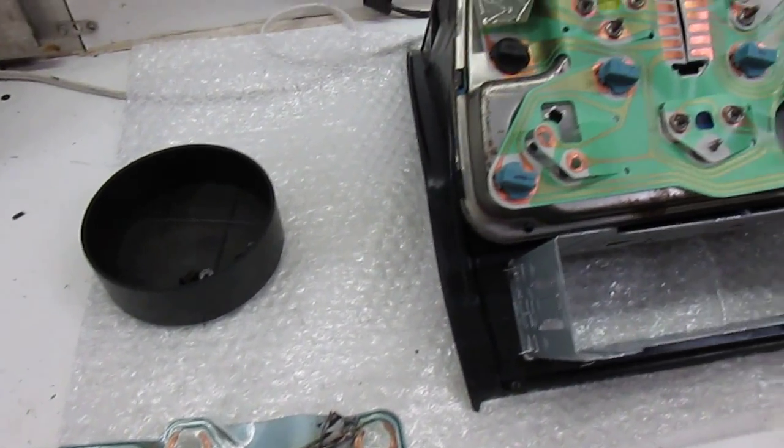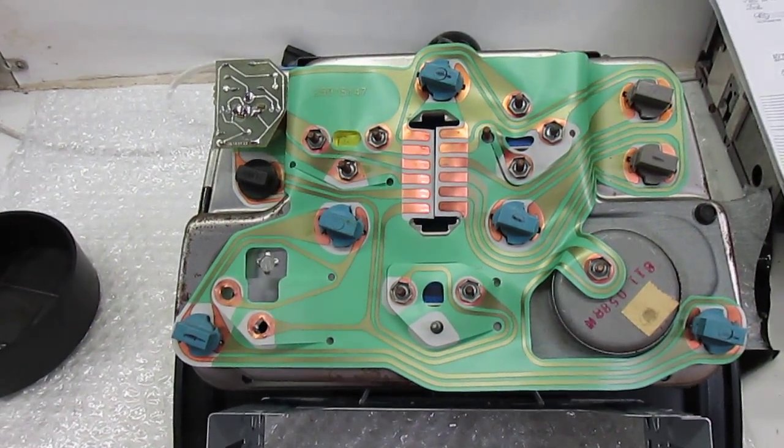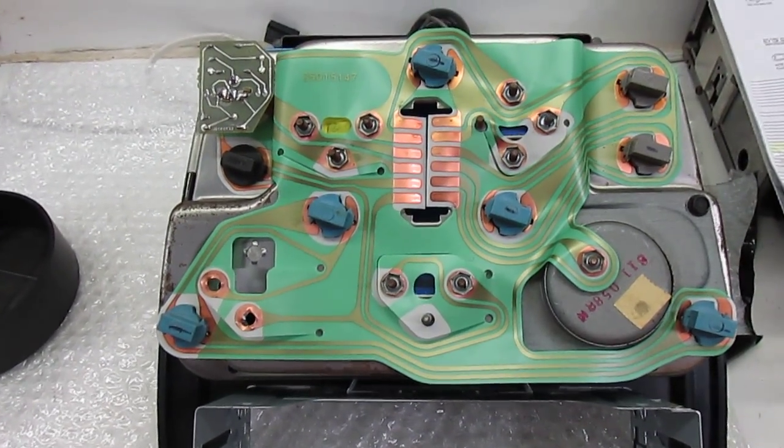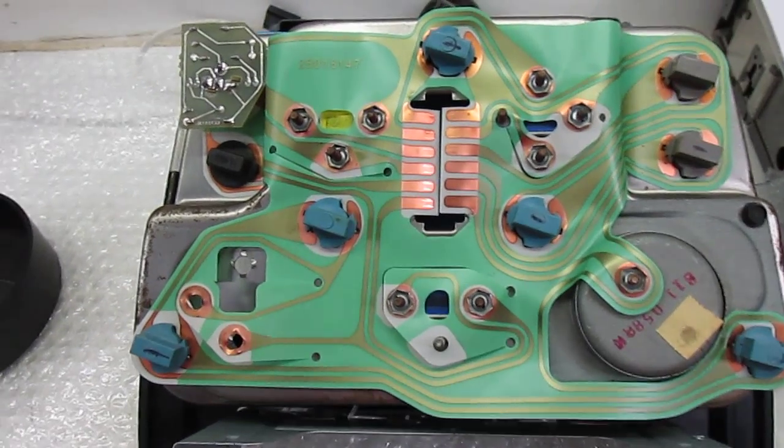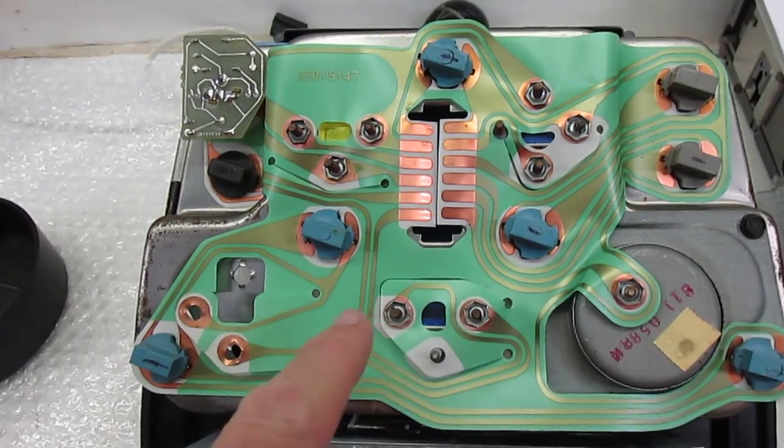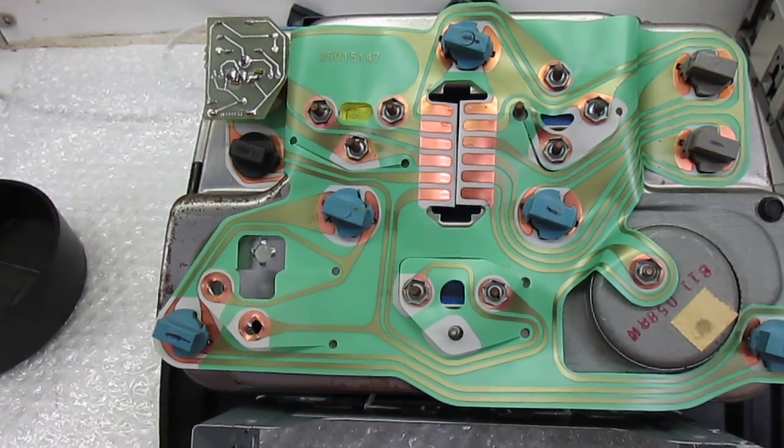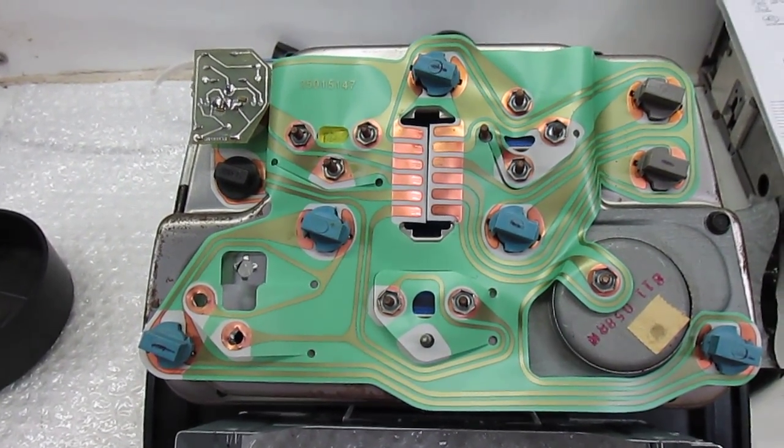So I totally rebuilt the center console and the tach speedometer console. Basically what I did is just cleaned it up real good, took a look at all the gauges and everything, took the whole thing apart, replaced the printed circuit. You can see how much nicer that looks. Put it all back together. Everything worked perfect except the voltmeter didn't work.